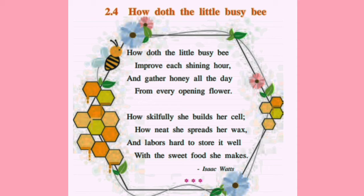Now let us see what the poem has to tell us. It is written by Isaac Watts. 'How doth the little busy bee improve each shining hour, and gather honey all the day from every opening flower. How skillfully she builds her cell, how neatly she spreads her wax, and labors hard to store it well with the sweet food she makes.'